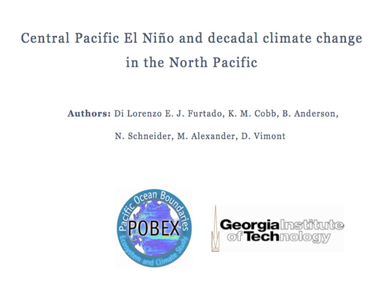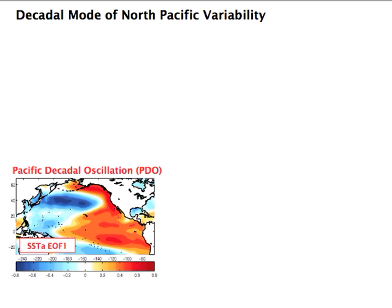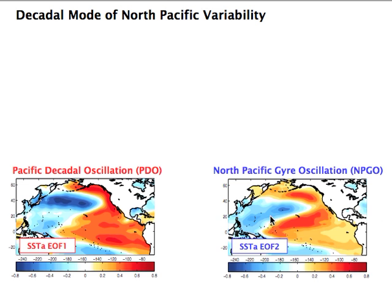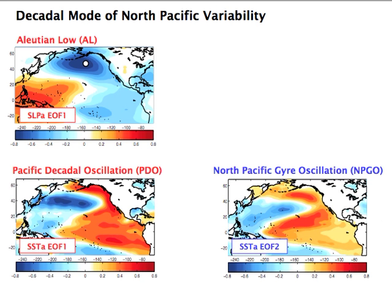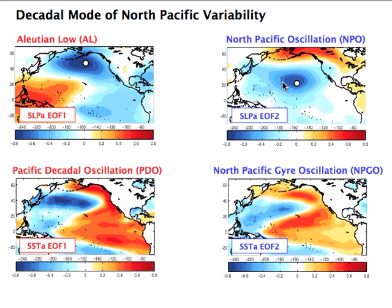This is a talk about Central Pacific El Niño and decadal climate change in the North Pacific. First, a review of the decadal modes of North Pacific variability. This is the pattern of the PDO, Pacific Decadal Oscillation, and the pattern of the NPGO — these are patterns in SST. These two patterns of oceanic variability have an atmospheric expression: the PDO and the Aleutian Low, the NPGO and the NPO.